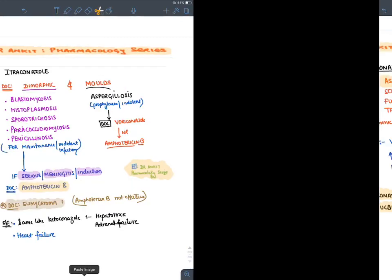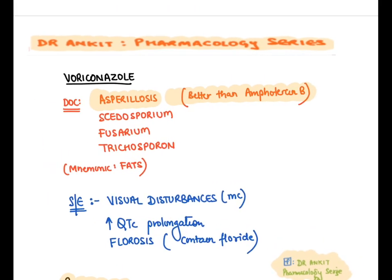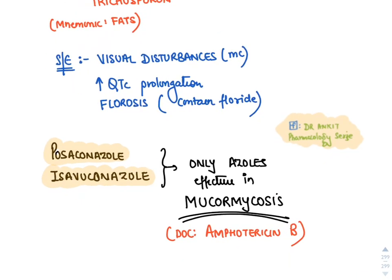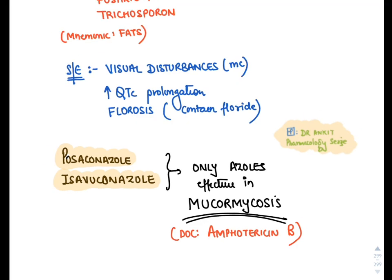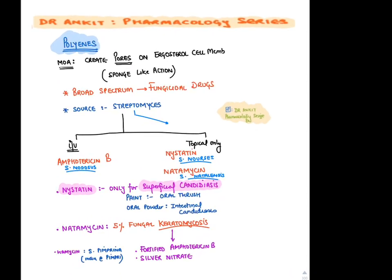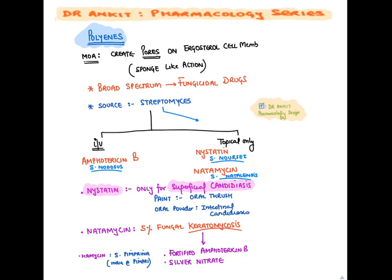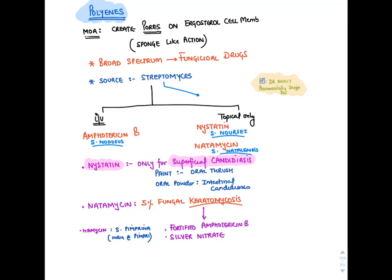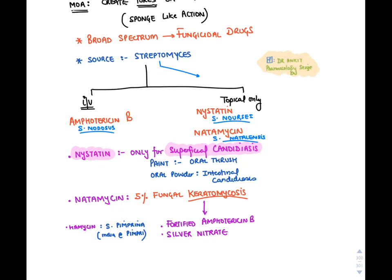For molds like Aspergillus, Scedosporium, Fusarium, and Trichosporon, voriconazole is preferred. Voriconazole and other azoles are not effective against mucormycosis; only posaconazole and isavuconazole work against mucormycosis, but the drug of choice remains amphotericin B. Polyenes are broad-spectrum fungicidal drugs derived from Streptomyces. Amphotericin B (from Streptomyces nodosus) is given IV for invasive infections.